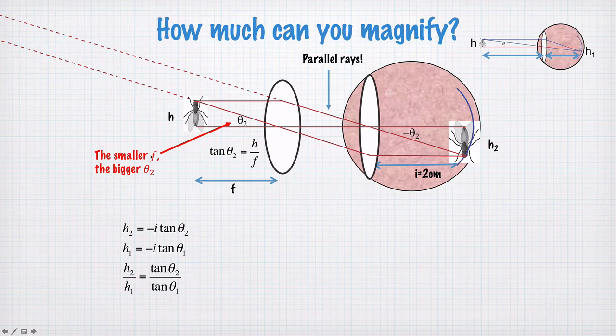Now the smaller f, the bigger theta2 will be. So this tells you straight away, lenses with a smaller focal length will make theta2 larger. Because as f gets smaller, theta2 will get larger.